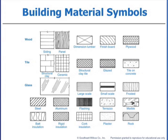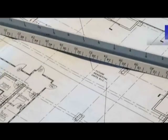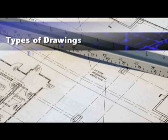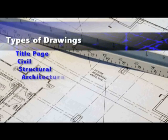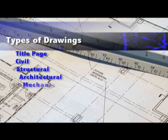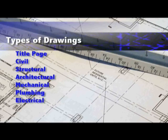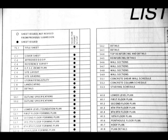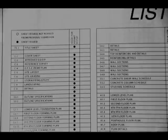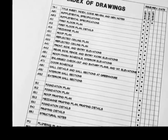The typical drawing organization for construction documents would be as follows: title page, civil drawings, structural drawings, architectural drawings, mechanical, plumbing, and electrical drawings. Each architect, owner, and engineer may have their own way to organize the documents, but it will be close to what we talk about today, and that's why I always start with the title page.